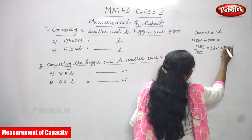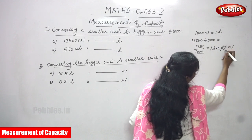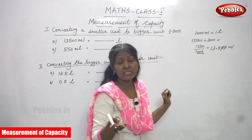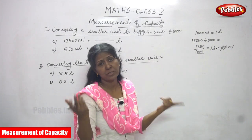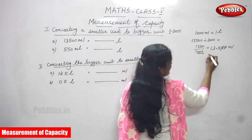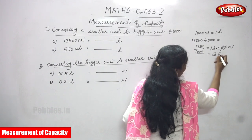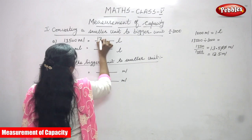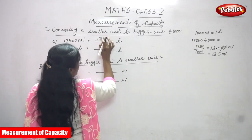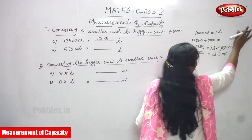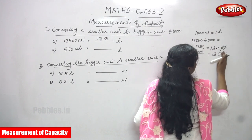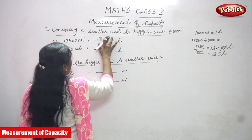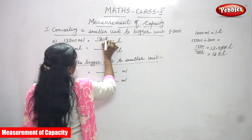After the point, if you have zeros there is no value for them, so you cancel them. The answer is thirteen point five. You are converting into liters, so thirteen point five liter is the right answer for the question.